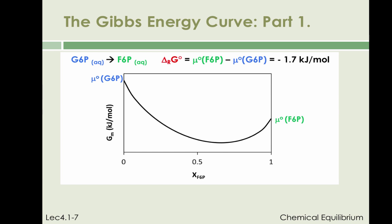In the preceding three slides, we represented the Gibbs energy of the reactive mixture as a function of composition by an inverted bell-shaped curve, as shown here. Over the next two slides, we show why this is so, and we use the isomerization of glucose 6-phosphate to fructose 6-phosphate for the purpose of illustration.